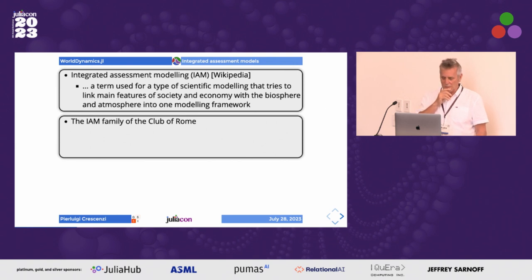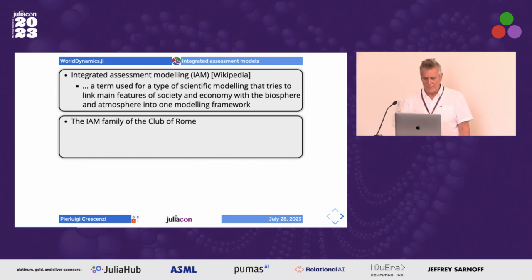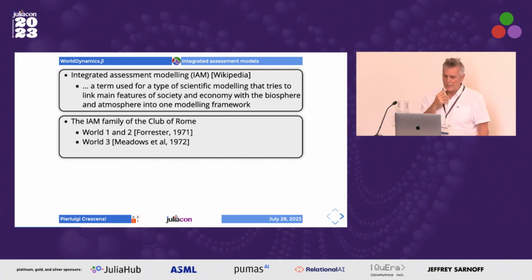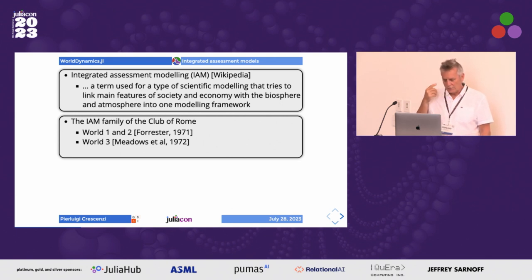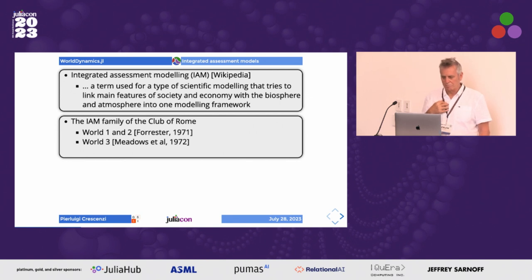In this talk and in the WorldDynamics.jl package we focus mostly on the family of IAMs produced by the Club of Rome, which is a non-profit association — some people talk differently about this association — but very active in the study of world economy. This family started in 1971 with a book by Jay Forrester. Maybe you know Jay Forrester because he was a quite famous computer scientist, also famous because he introduced what is called System Dynamics.